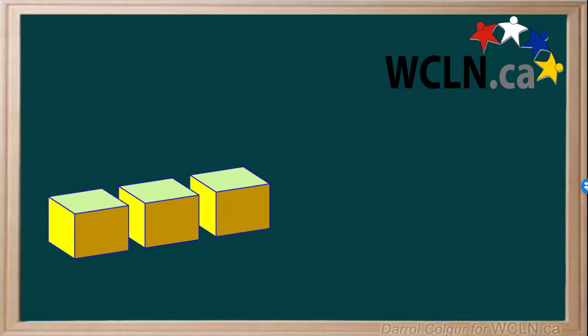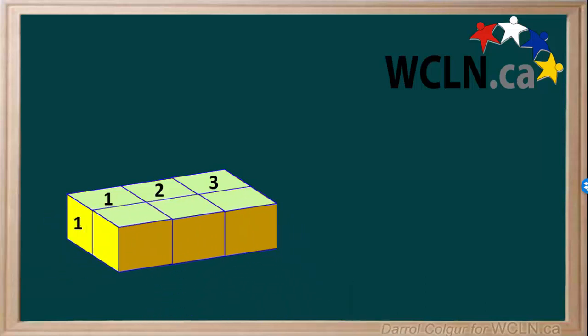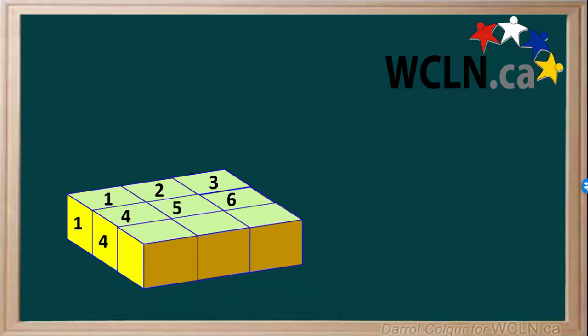Now we'll bring in 2 more identical cubes and join them together. We'll number them as 1, 2, and 3. Now we'll bring in 3 more in front of these, numbered 4, 5, and 6. We'll bring in another 3, numbered 7, 8, and 9. So now we have a layer consisting of 9 identical cubes joined together.